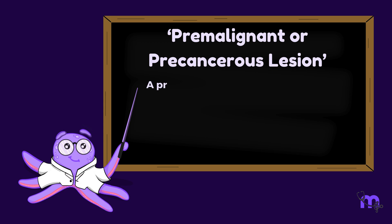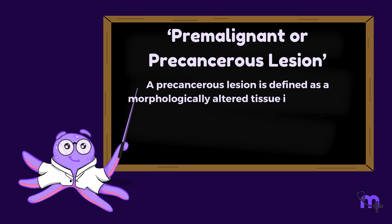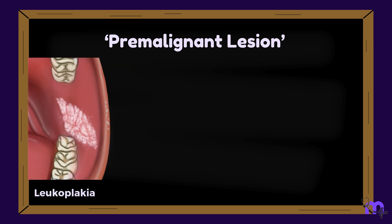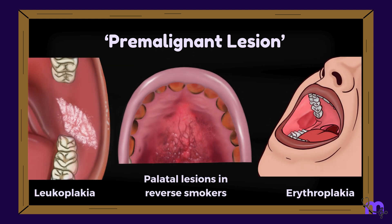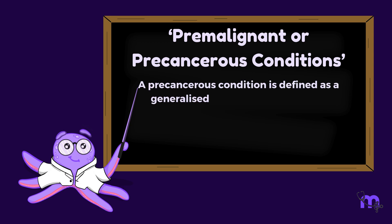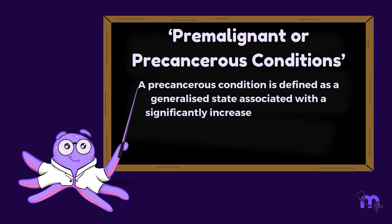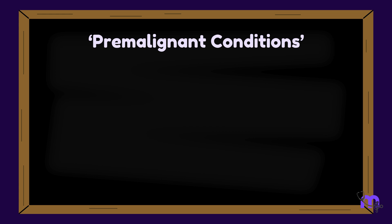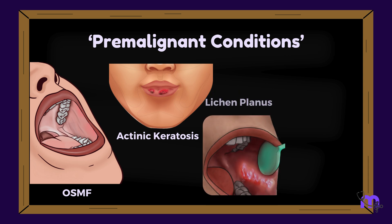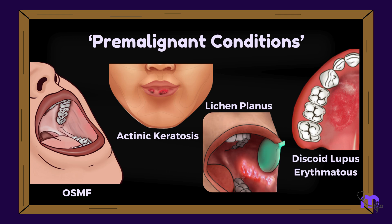A precancerous or pre-malignant lesion is defined as a morphologically altered tissue in which oral cancer is more likely to occur than in its apparently normal counterpart. It includes leukoplakia, erythroplakia, and palatal lesions in reverse smokers. A precancerous or pre-malignant condition is defined as a generalised state associated with a significantly increased risk of cancer. Some of these conditions are oral submucous fibrosis, actinic keratosis, lichen planus, and discoid lupus erythematosus.